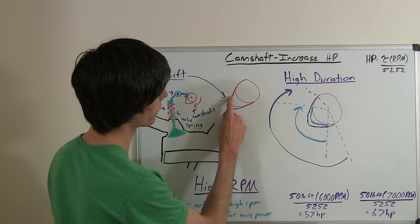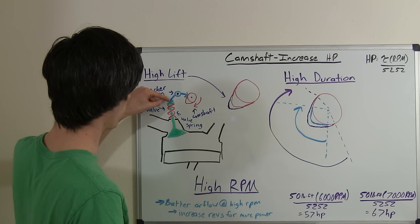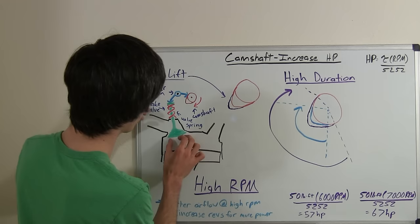you could see that if the cam lobe was larger, as we've got here, when it got to this point, it would push this up more, and it would push, so that would therefore push down this valve more. So the valve would come down more, allowing a greater area for air to flow in.